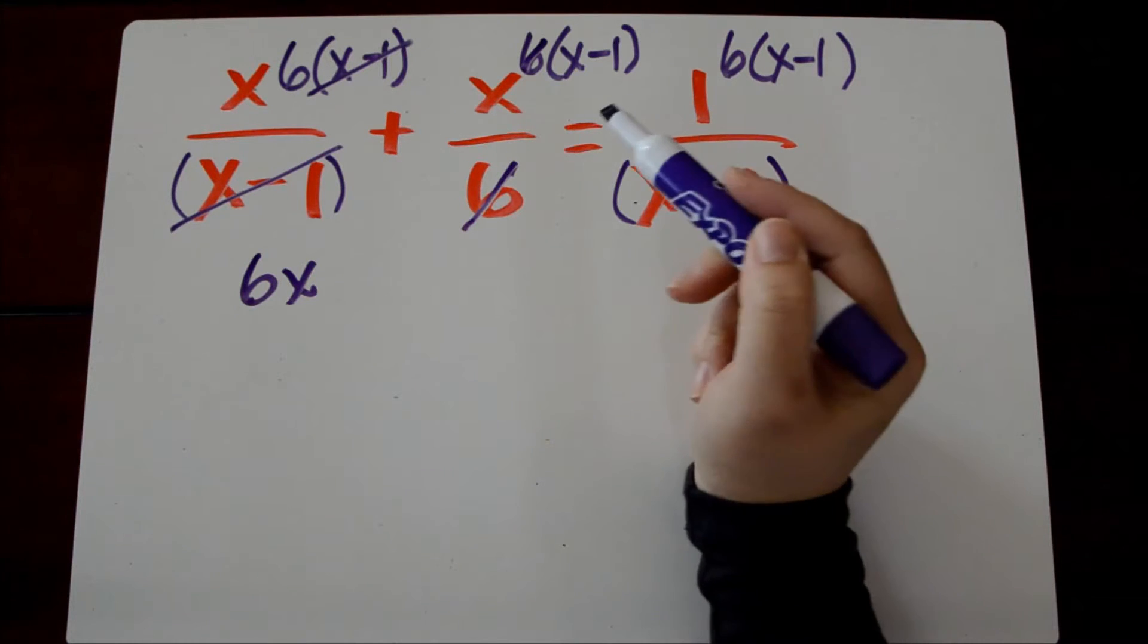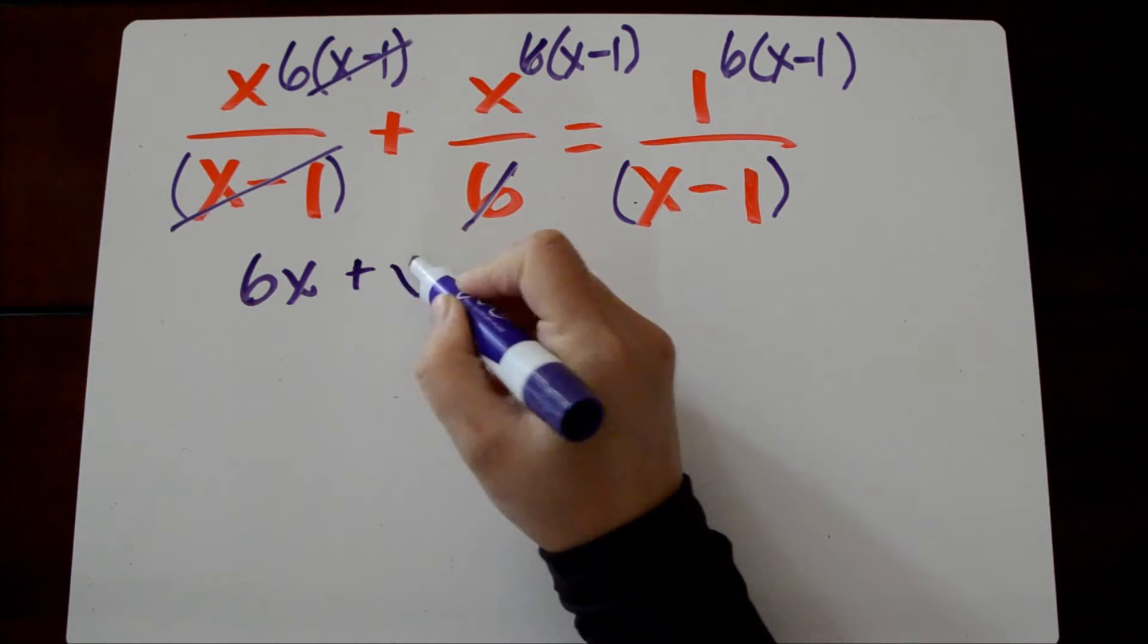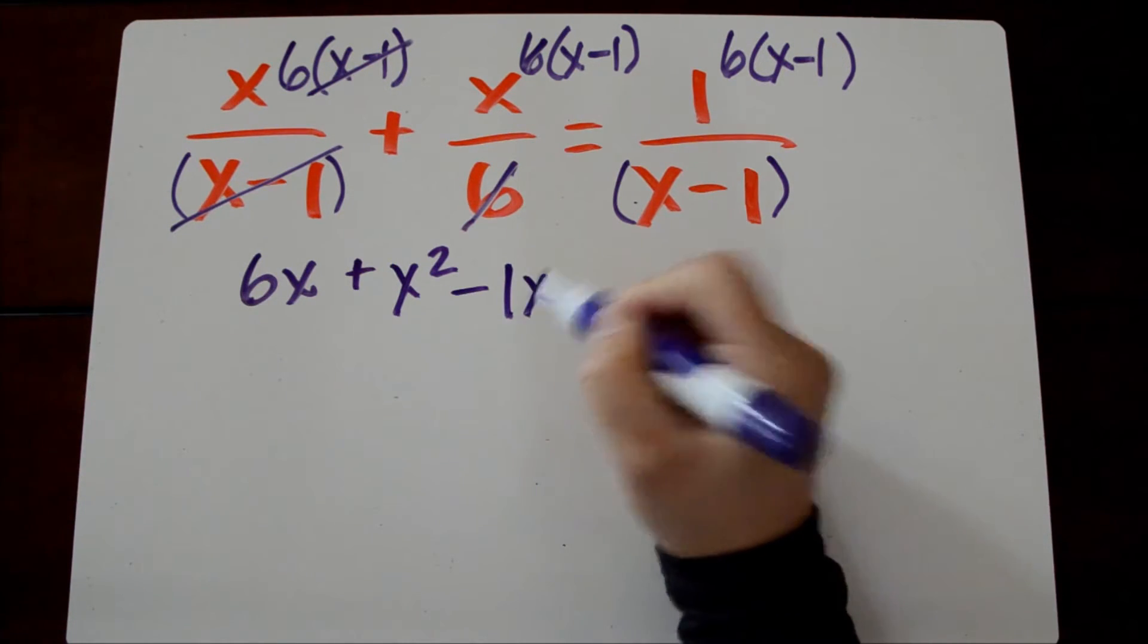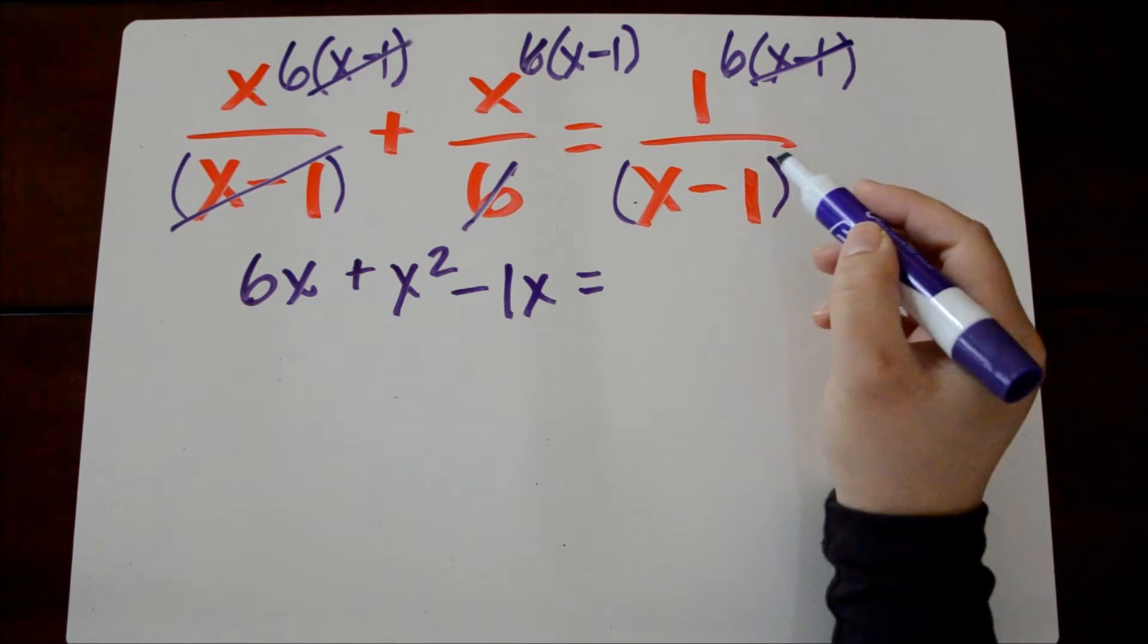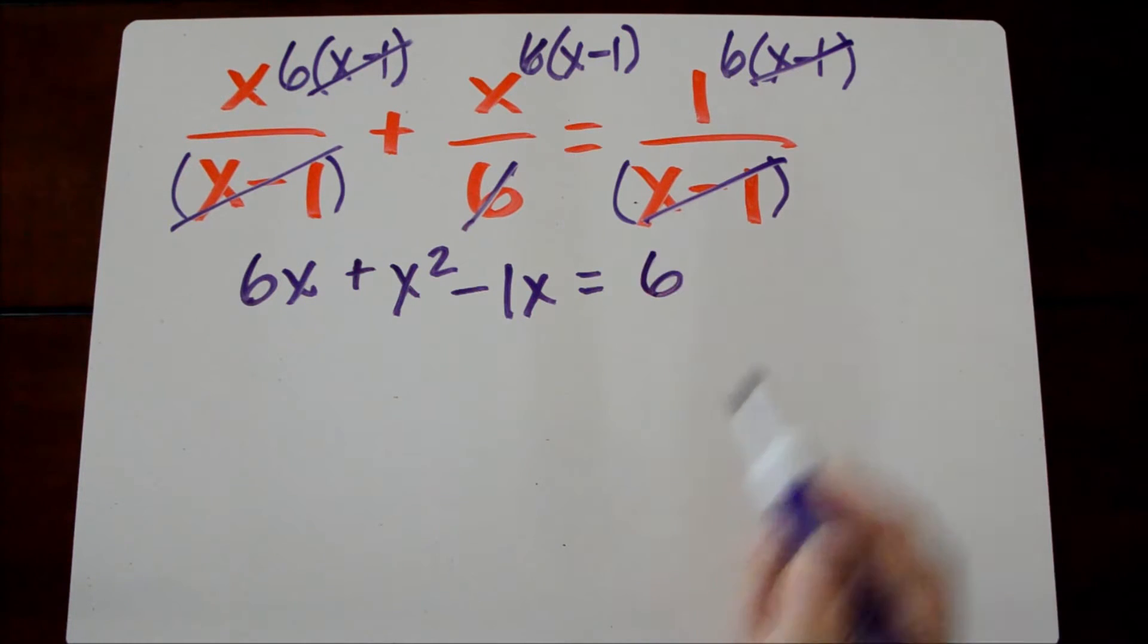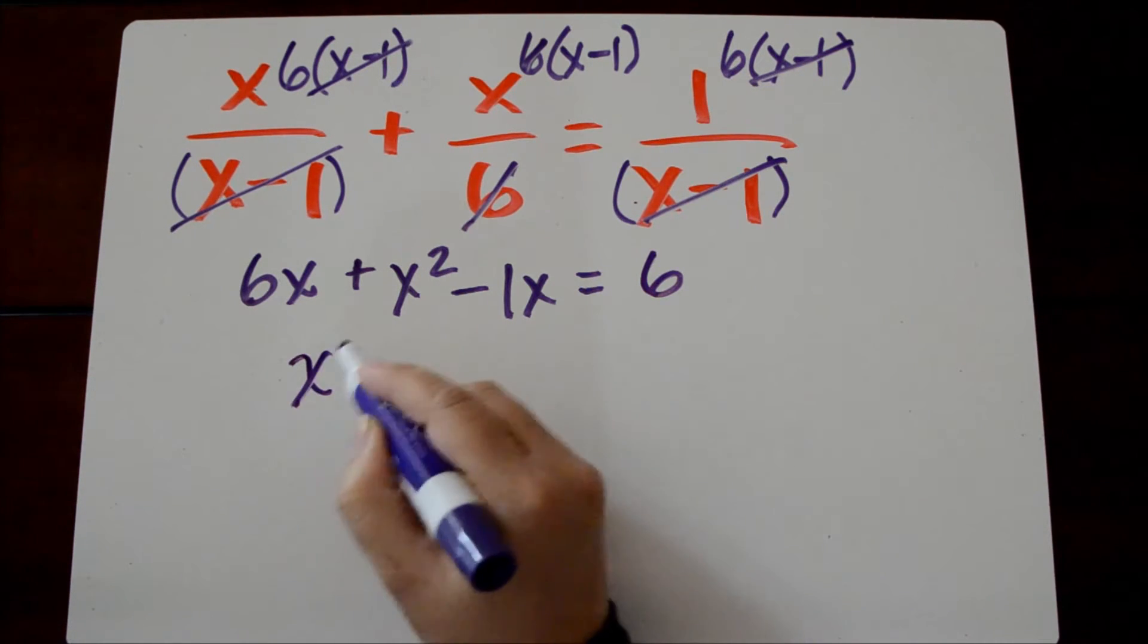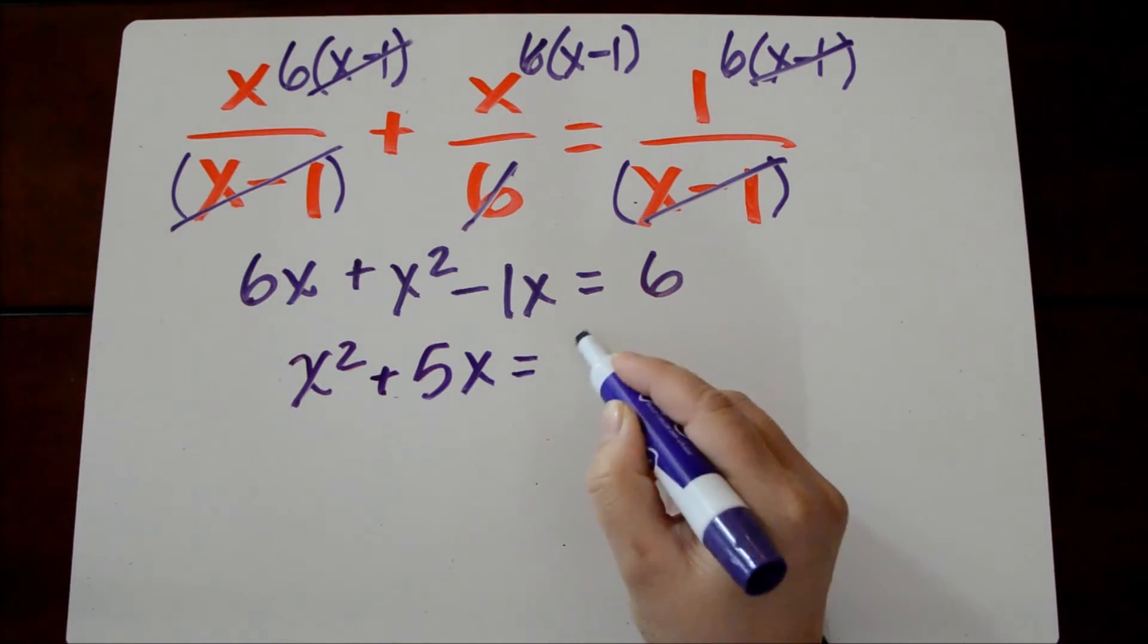And then I distribute x to x minus 1, and I get plus x squared minus 1x. And then on the other side of the equals sign, before I distribute, I'm going to divide out the x minus 1's because anything divided by itself is 1, and 1 times 6 is 6. I'm going to simplify the left-hand side. We get x squared. 6x minus 1x is plus 5x equals 6.